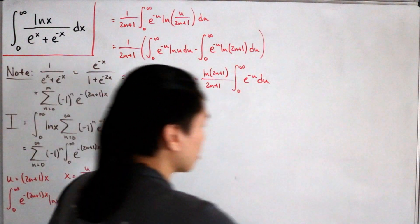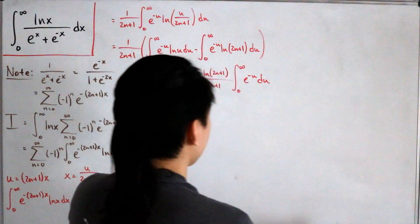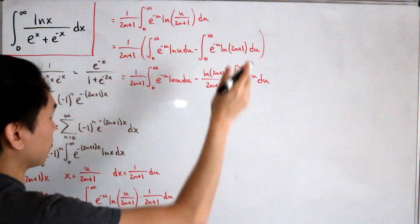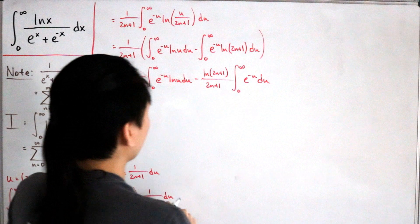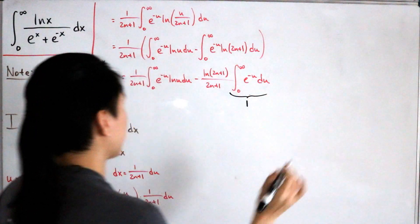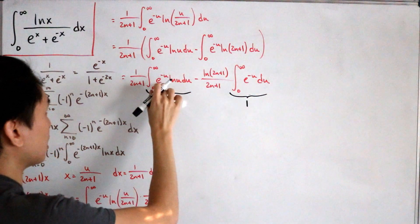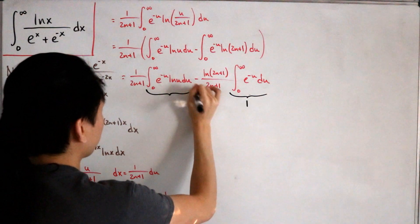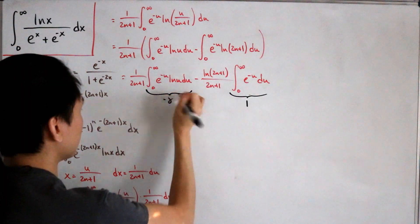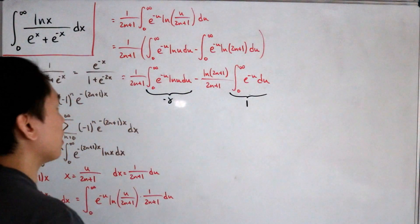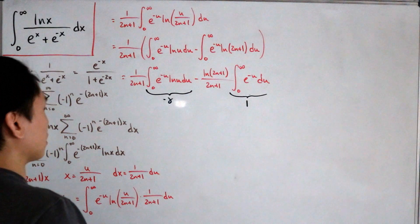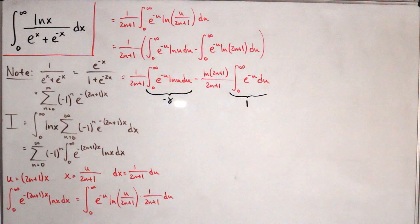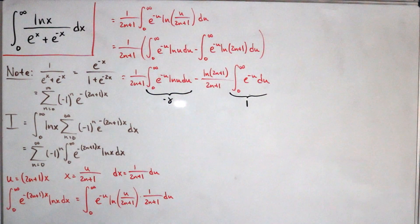The simpler integral: ∫₀^∞ e^(-u) du evaluates to 1 (via −e^(-u) from 0 to ∞). The other integral, ∫₀^∞ e^(-u)·ln(u) du, is a special result equal to the negative Euler-Mascheroni constant, −γ. I covered the derivation of that in a previous video, linked in the description.